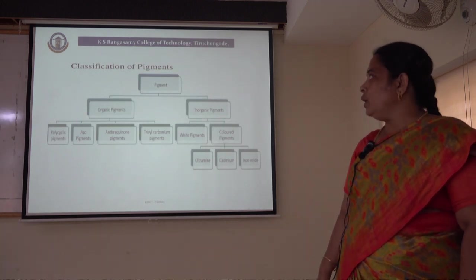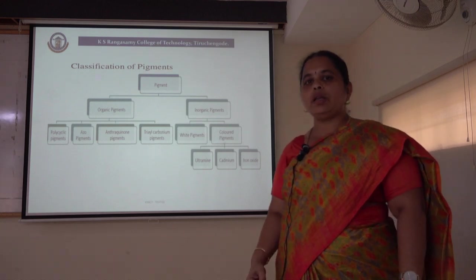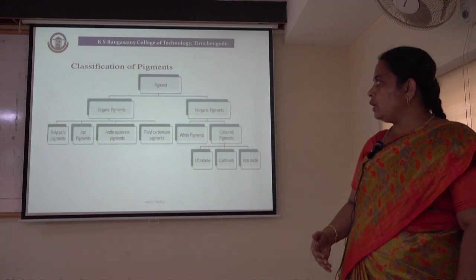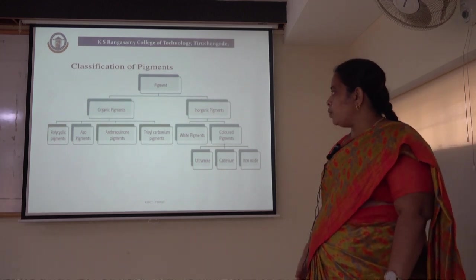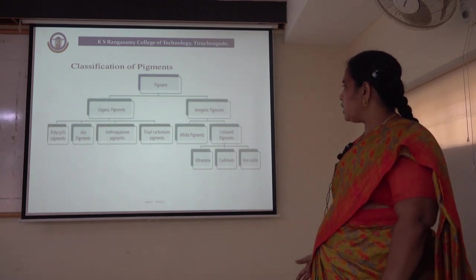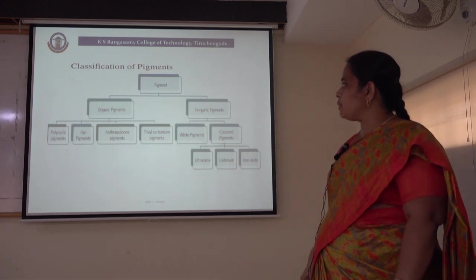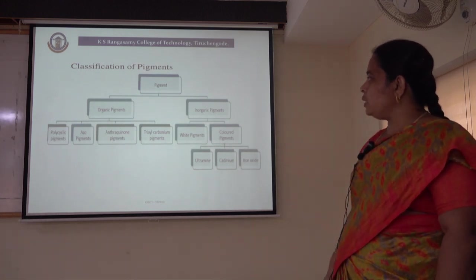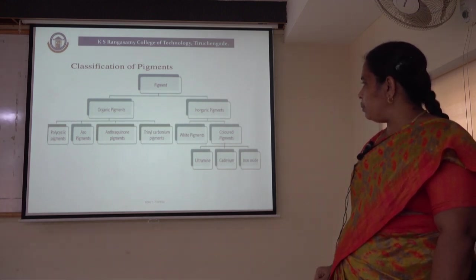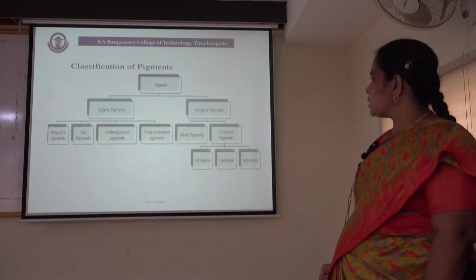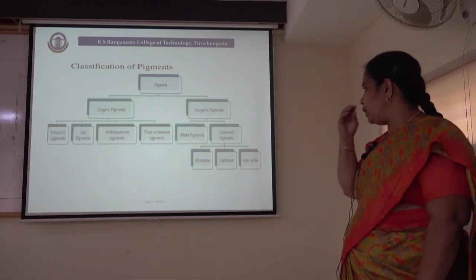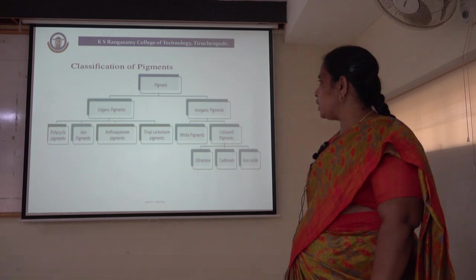Next, we are going to discuss about pigments. Like dyes, pigments are the next colouring substance widely used to impart colour to textile materials. Pigments are mostly inorganic substances and are of two types: organic pigments and inorganic pigments. Organic pigments may be polycyclic pigments, azo pigments, anthraquinone pigments, and triarylcarbonium pigments. Inorganic pigments include white pigments and coloured pigments — the coloured pigments can further be ultramarine, cadmium and iron oxide. These inorganic coloured pigments are widely used in the textile industry.